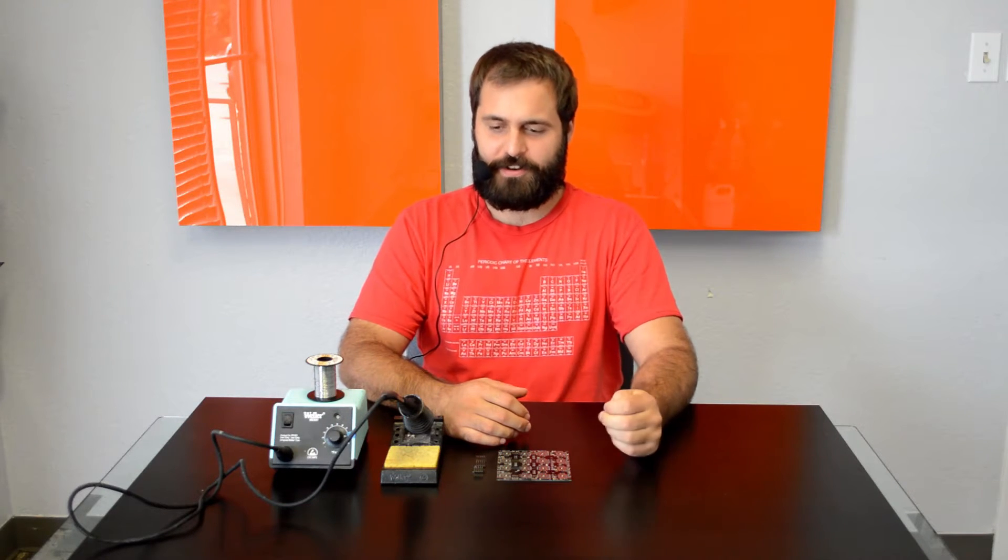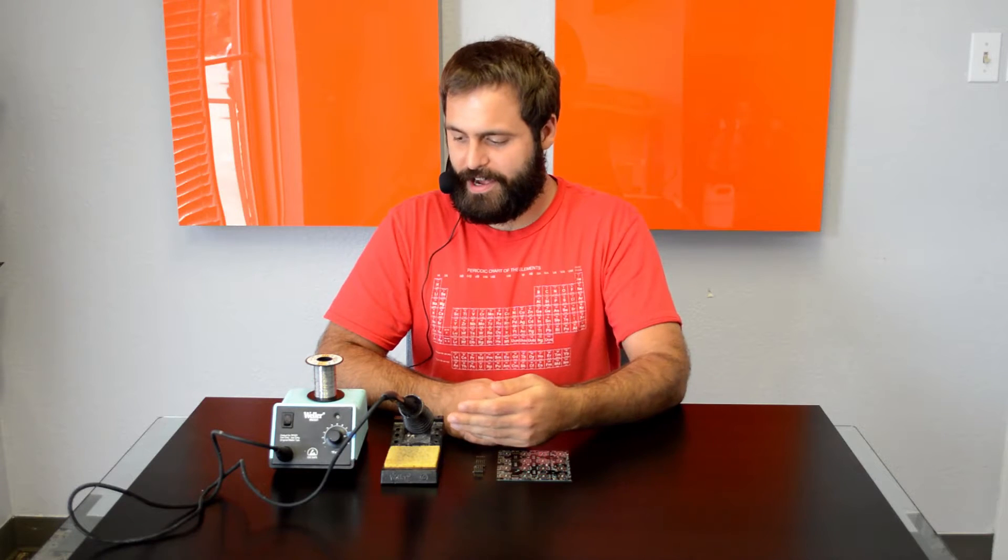So the key things to have when you're soldering are going to be a soldering iron, some solder, and a project that needs soldering. Today we're going to use an RGB omniboard.